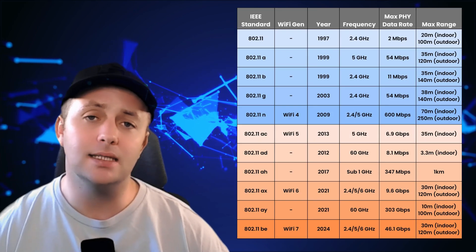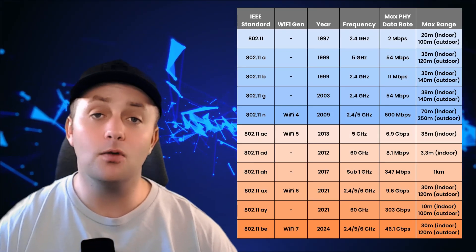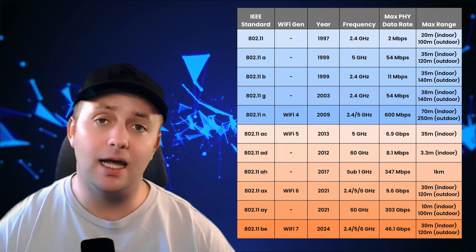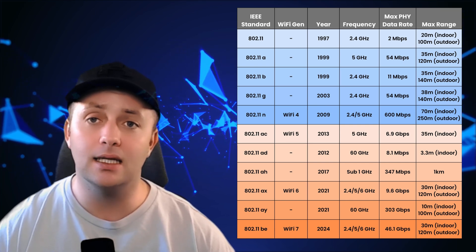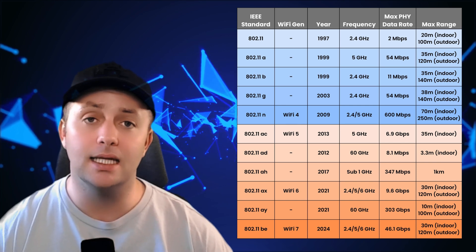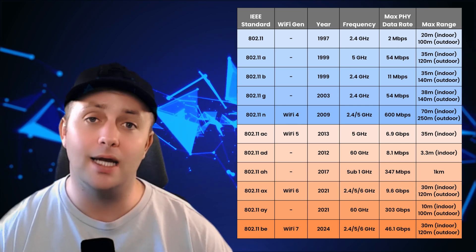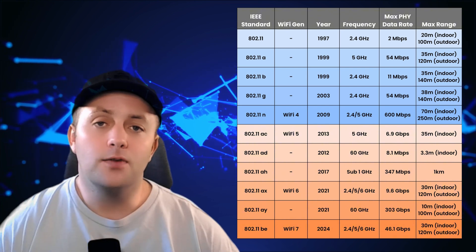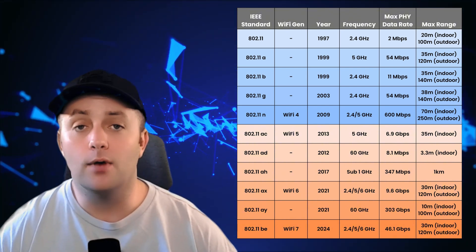Wi-Fi networks are based on standards set by the IEEE, and the most common standard is 802.11. Over the years, several versions of 802.11 have been developed, including 802.11n, 802.11ac, and the latest 802.11ax, which is also known as Wi-Fi 6. Each version brings improvements in speed, capacity, and range.